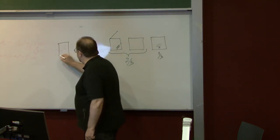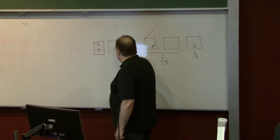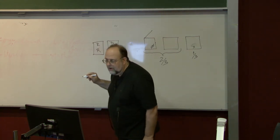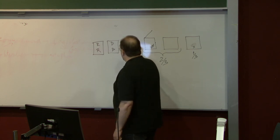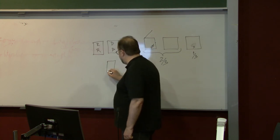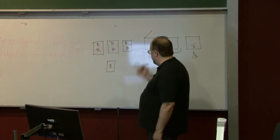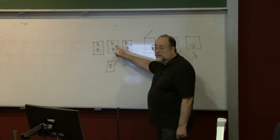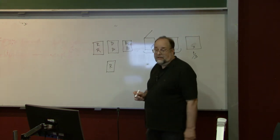Three cards problem. There are three cards. One is red on both sides, one is blue on both sides, and one is red on one side and blue on the other side. You pick a card at random, and then choose a side at random, and look at it, and it turns out that it is red. What is the probability that the other side is also red?